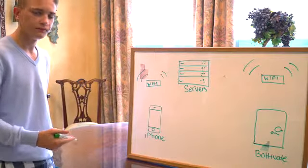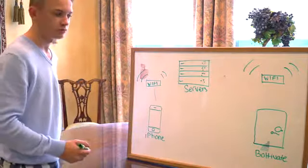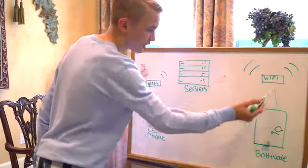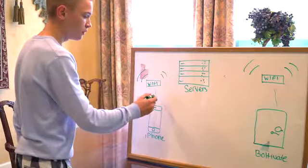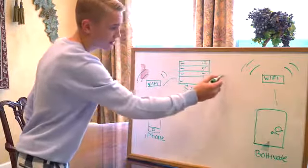Boltevate is controllable from anywhere in the world from our mobile app. What is the Bolt cloud, you may ask? It's very simple. Your phone will connect to a Wi-Fi or data signal. Boltevate will connect to your house's Wi-Fi. Your phone, on the Wi-Fi signal, will connect to our servers, and so will Boltevate through your house's Wi-Fi.